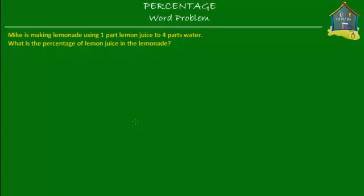Welcome to homecampus.com.sg. Let's solve a word problem. The problem given to you is: Mike is making lemonade using one part lemon juice to four parts water. What is the percentage of lemon juice in the lemonade?